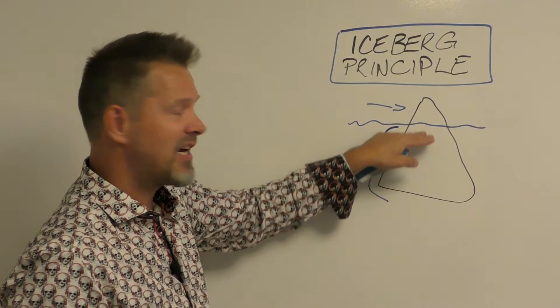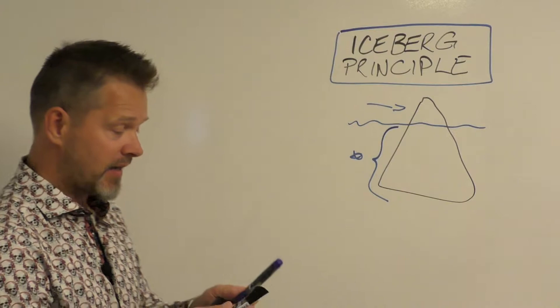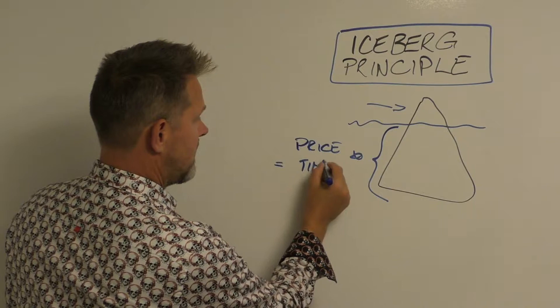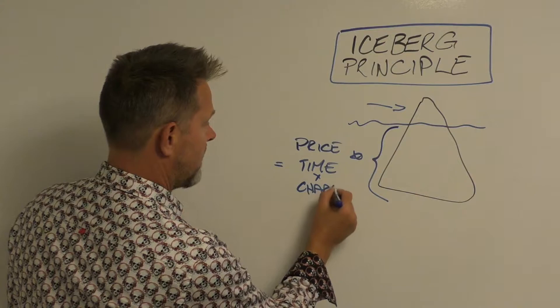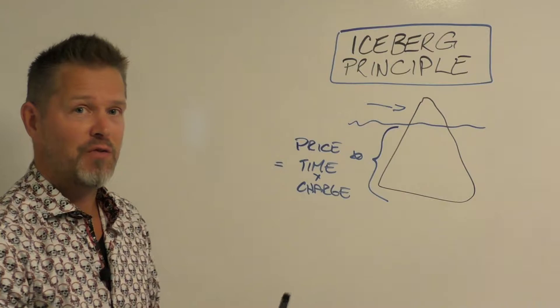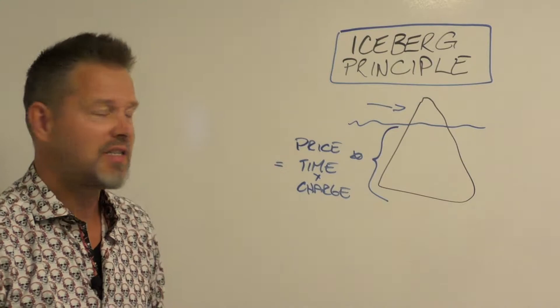Which is like the billable hour model. And so that model is the price is equal to the time spent times their charge-out rate, because that is a reflection of all the stuff that you do—all the time that you spent. So most accountants figure that this is the value. This is the value that they need to charge, and that's how they come up with a price.